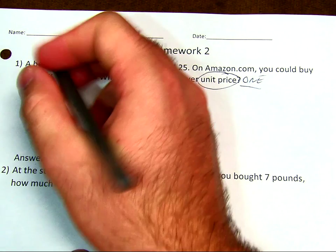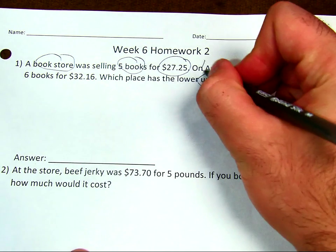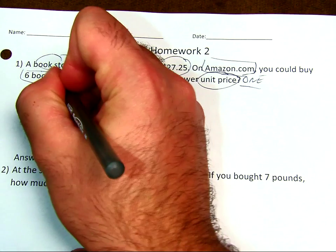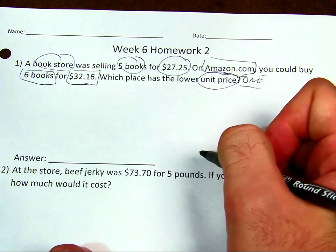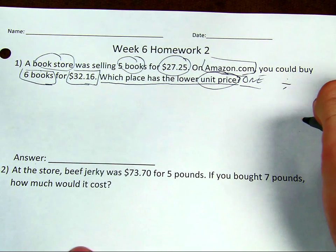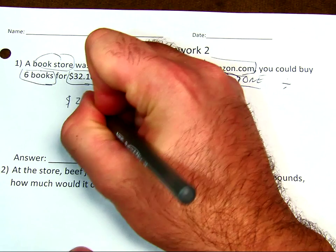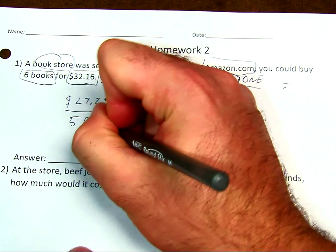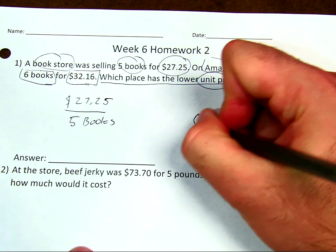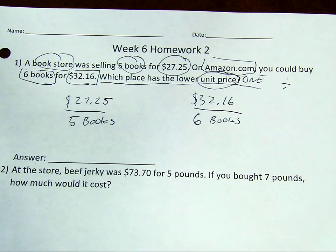I'm going to annotate as I re-read it. A bookstore was selling five books for $27.25 — I'll circle that. On Amazon.com you could buy six books for $32.16 — I'll mark that in a different shape to keep them distinct. When I see 'unit price,' I know I'm going to be dividing, so I set up my fractions. Money always goes on top: $27.25 for five books, and $32.16 for six books.